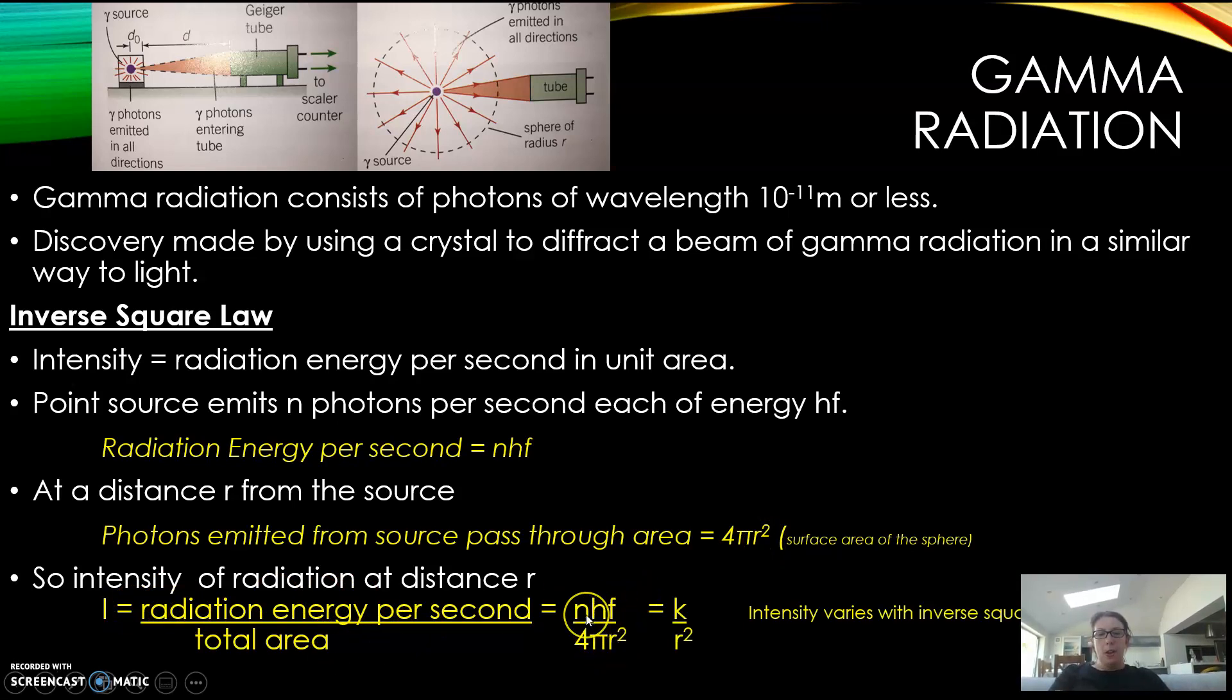So intensity is radiation energy per second divided by area: nhf divided by 4πr². n is the number of photons emitted per second, h the Planck constant, f the frequency of the photons. Four and pi are all constant for a given source, so the intensity equals a constant k over r², and this is called an inverse square law.